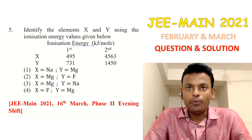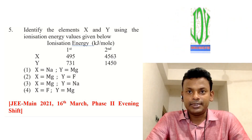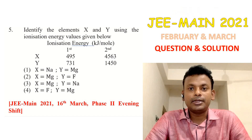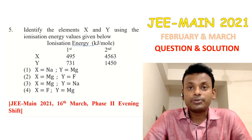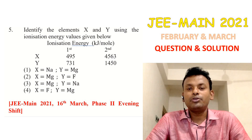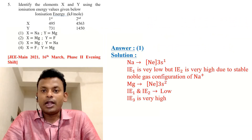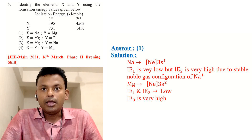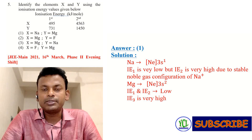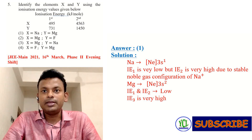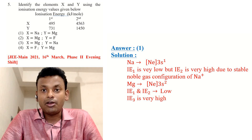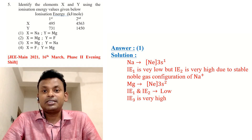Question 5: Identify elements X and Y using ionization values — X: first ionization enthalpy 495 kJ/mol, second ionization enthalpy 4563 kJ/mol; Y: first ionization enthalpy 731 kJ/mol, second ionization enthalpy 1450 kJ/mol. Options are given. This question was set in JEE Main 2021, 16th March, page 2, evening shift. Answer is option 1: X = sodium, Y = magnesium. Sodium has configuration [Ne] 3s¹ — very low first ionization enthalpy but very high second due to the stable noble gas configuration of Na⁺.